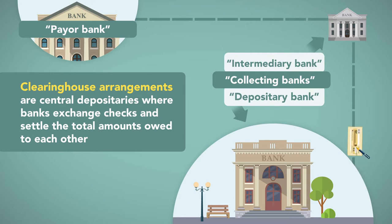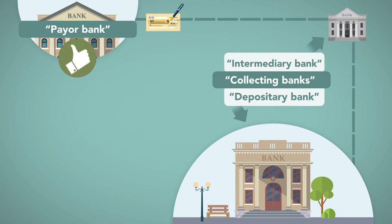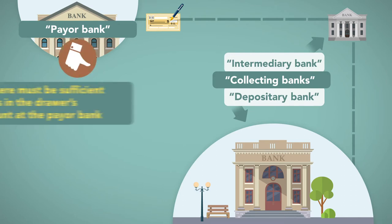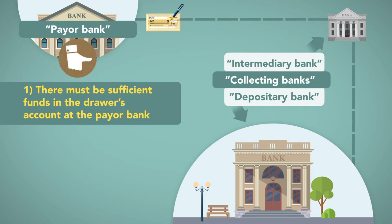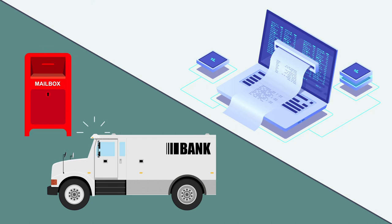The check may be routed through what the code calls 'intermediary banks' on its way from the depository bank to the payer bank. For the payer bank to honor the check upon presentment, two conditions must be satisfied: first, there must be sufficient funds in the drawer's account at the payer bank, and second, the check must be 'properly payable,' which means the check fulfills certain criteria for payment. While checks have historically traveled physically through the payment system, today federal law provides for electronic check processing.